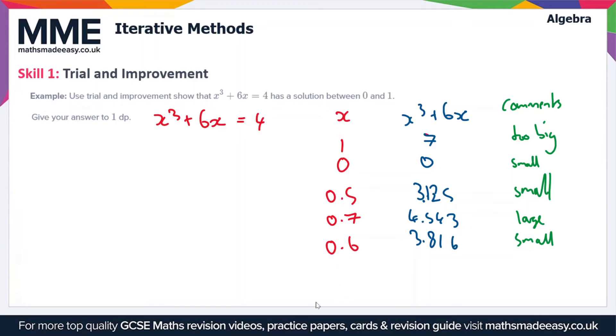Now at this point we've got a solution of 0.7 which is too large, and a solution of 0.6 which is too small. So what we're going to do next, because this is either side of our value that we want which is 4, and these are both to one decimal place, we're going to try a value to two decimal places of 0.65.